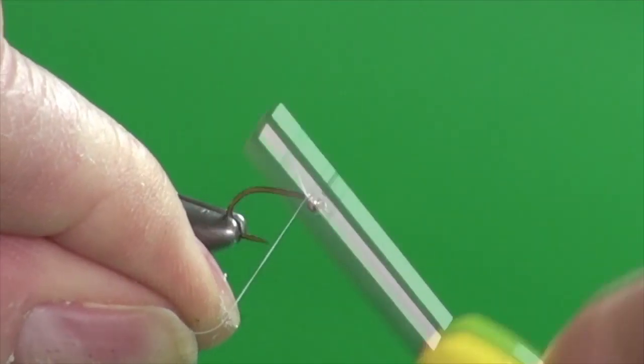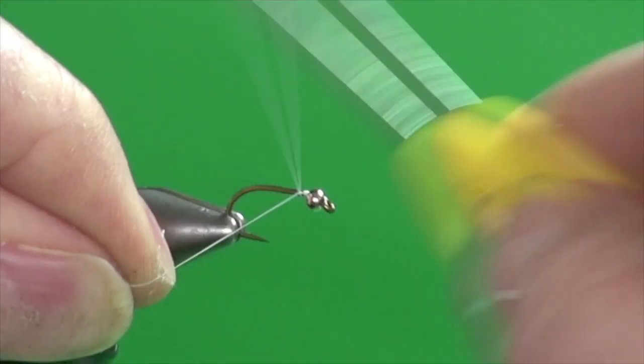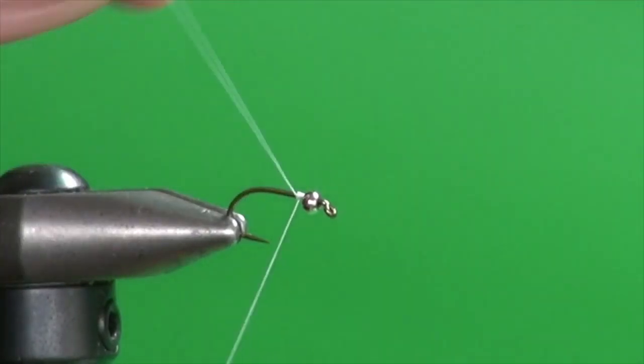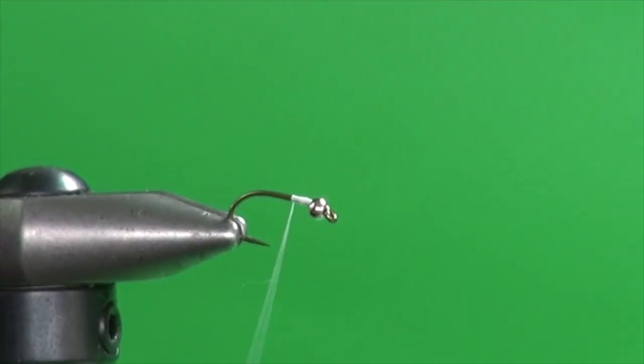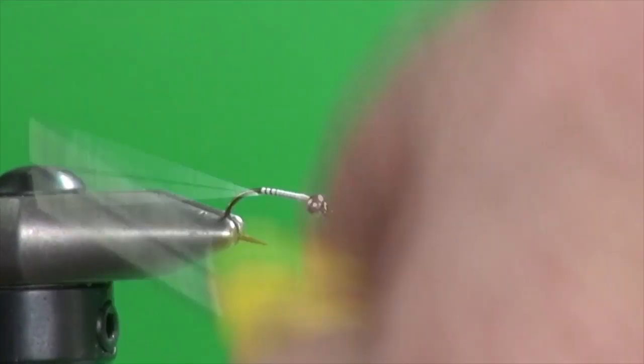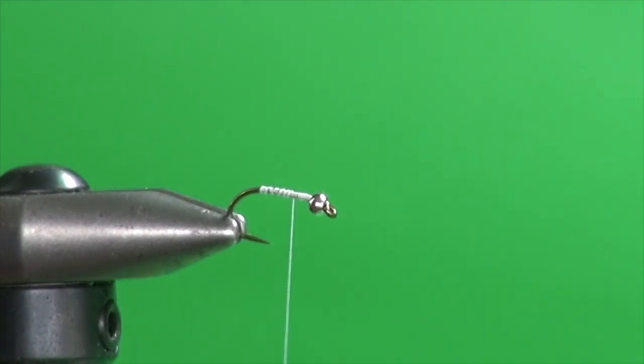And we're going to use some white tying thread. Just get that started, break off the excess, put a good thread base down, advance the thread forward, just a little bit forward of the hook eye. And then we're going to put a little butt section on this.